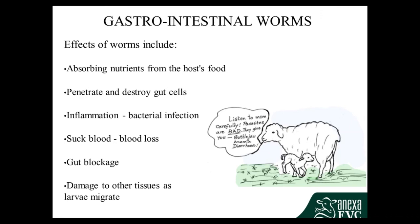Now the suck-blood point. That's a specific worm predominantly in sheep and alpacas, commonly known as barber's pole — its proper name is Haemonchus contortus. It burrows into the wall of the intestine, gains access to the blood, and actually sucks the blood. You only need a very small number of them to have a significant effect because they cause anaemia, making this a very serious parasite among sheep, goats, and alpacas.